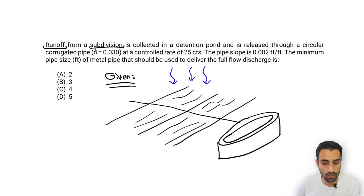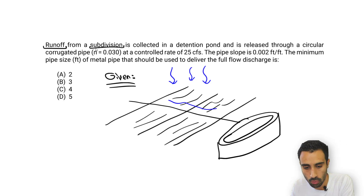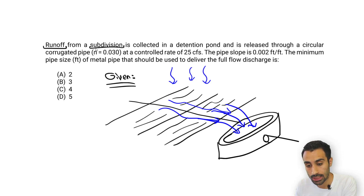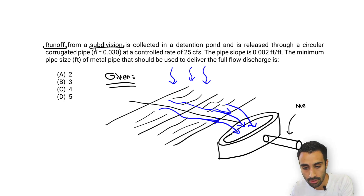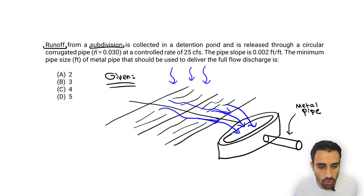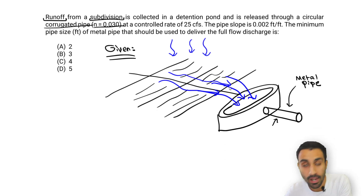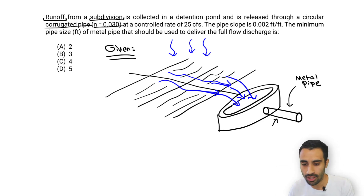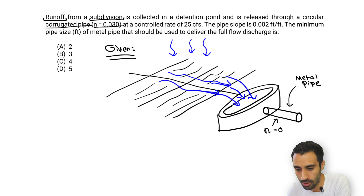We store that water and slowly release it from the pond. The water comes off the subdivision, goes into the detention basin, and then we slowly release it through a pipe — in this case, a corrugated metal pipe. That's the crucial pipe we're analyzing. This pipe has an n value of 0.03, which is the Manning coefficient. Manning coefficient points us toward the Manning equation.